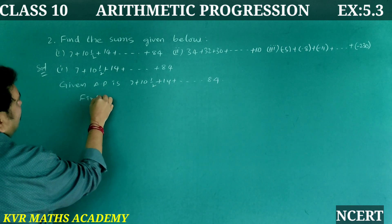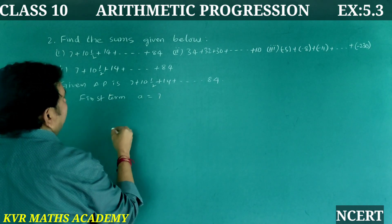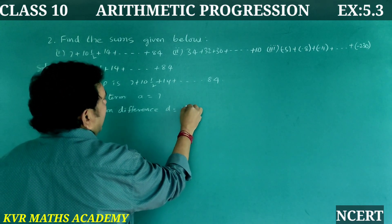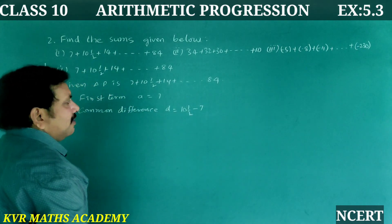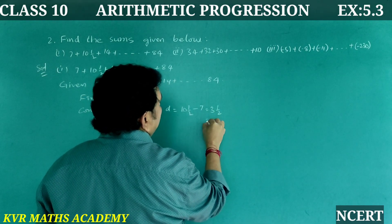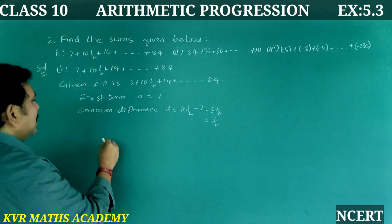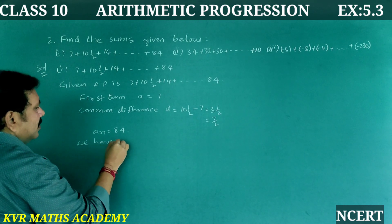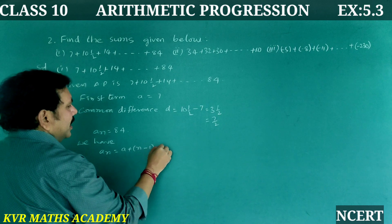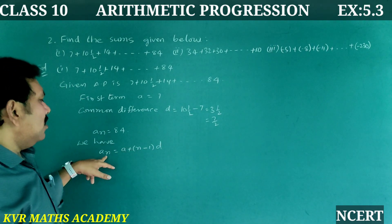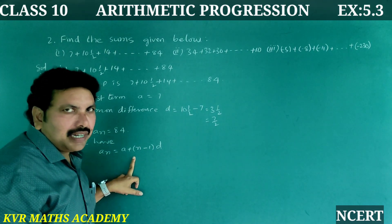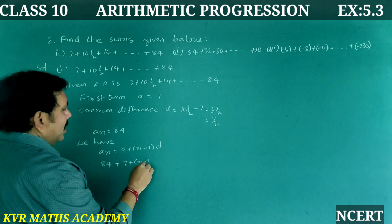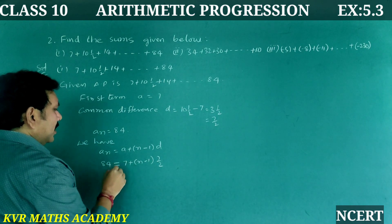Given AP: 7, 10½, 14, ..., 84. First term a = 7. Common difference d = 10½ − 7 = 3½ = 7/2. Last term aₙ = 84. Using aₙ = a + (n−1)d: 84 = 7 + (n−1)×(7/2).